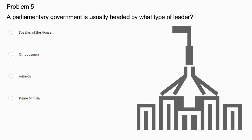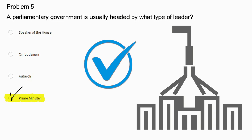Problem number 5. A parliamentary government is usually headed by what type of leader? Speaker of the House, Ombudsman, Autarch, or Prime Minister? A parliamentary government is headed by a Prime Minister, who is the Chief Executive and leads the government. The Speaker of the House leads the legislative session. An Ombudsman handles public complaints. And an Autarch is a ruler with absolute power. So Prime Minister is the correct answer.